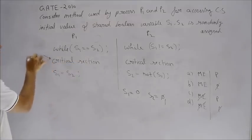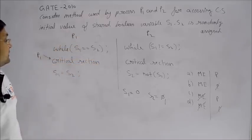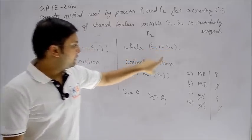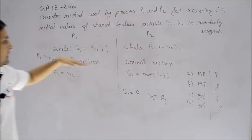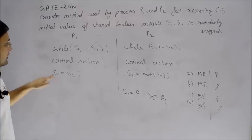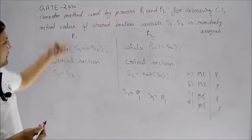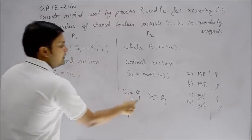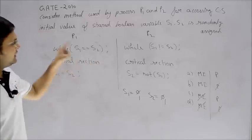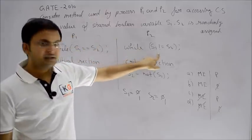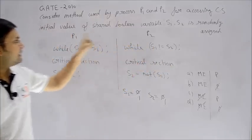P1 enters the critical section. If P2 tries again, s1 != s2 checks 0 != 1 — condition is true, so P2 stays in the loop while P1 is in the critical section. When P1 comes out, it sets s1 = s2, making both values 1. Now when P2 tries, both values are different again. When values are the same, P1 cannot enter; P2 enters. When values are different, P2 cannot enter; P1 enters.